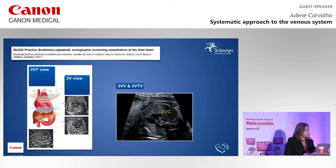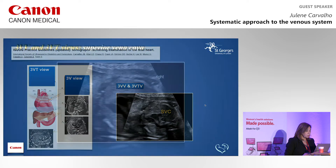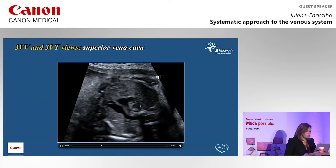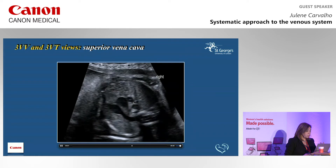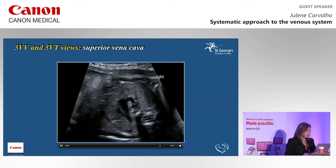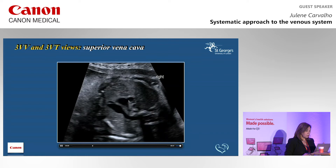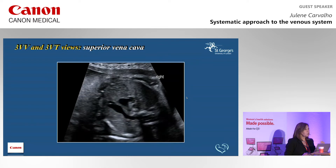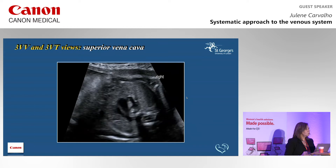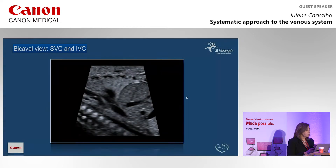Moving to the views higher up in the mediastinum, that's a combination of the three vessel and three vessel trachea view, in which you have from left to right the pulmonary artery, aorta, and the superior vena cava. These are all axial views. You can already see a little bit of the azygous that we'll talk about later - it's not meant to be assessed on screening guidelines, but we're always trying to do more. Some of you may just be starting cardiac screening and sticking to those views, but we can see structures from all sorts of projections.